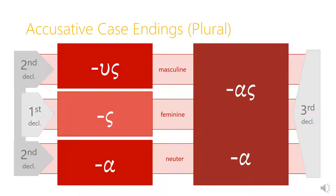So this is one place where gender plays more of a role than declension does, at least as far as the accusative plural ending goes. When we add in the typical connecting vowels, the second declension masculine ending becomes -ous (omicron epsilon sigma). The first declension feminine ending becomes -as, with the typical alpha connecting vowel used consistently in the first declension plural, plus the sigma. The second declension neuter accusative plural ending is just -a, with no other connecting vowel in front of it. In the third declension we have no connecting vowels, so we just have -us in the masculine and feminine, and -a for the neuter.